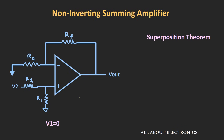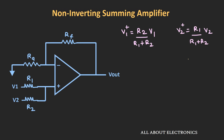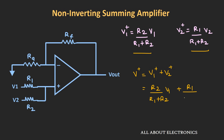Likewise, when V2 acts alone (V1 = 0), the voltage V2+ = R1/(R1 + R2) · V2. The total voltage V+ is the sum of individual contributions: V+ = R2/(R1 + R2) · V1 + R1/(R1 + R2) · V2. This combined V+ is then used to find the final output voltage of the non-inverting summing amplifier.